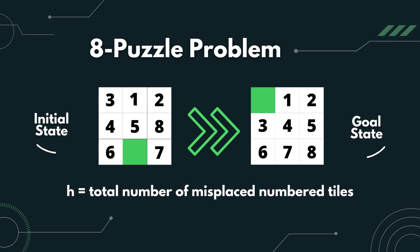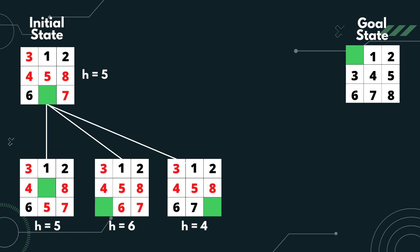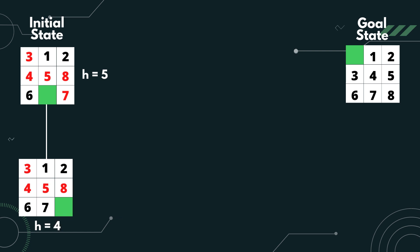Let's look at another example. This time, it is the 8-puzzle problem. The goal is to convert the initial state to the goal state. The heuristic value H in this case is the total number of misplaced numbered tiles. We assume the initial state as the start point. Currently, the number of misplaced numbered tiles is 5, as highlighted in red. There are three moves that we can do: move 5 downwards, move 6 to the right, or move 7 to the left. Out of the three moves, moving 7 to the left would be best as H will be reduced to 4. Therefore, moving 7 to the left is the selected move.